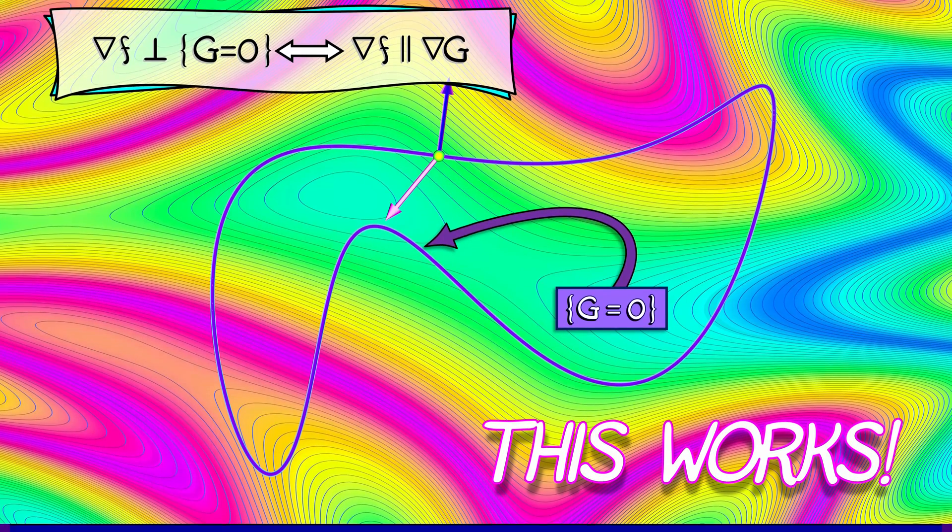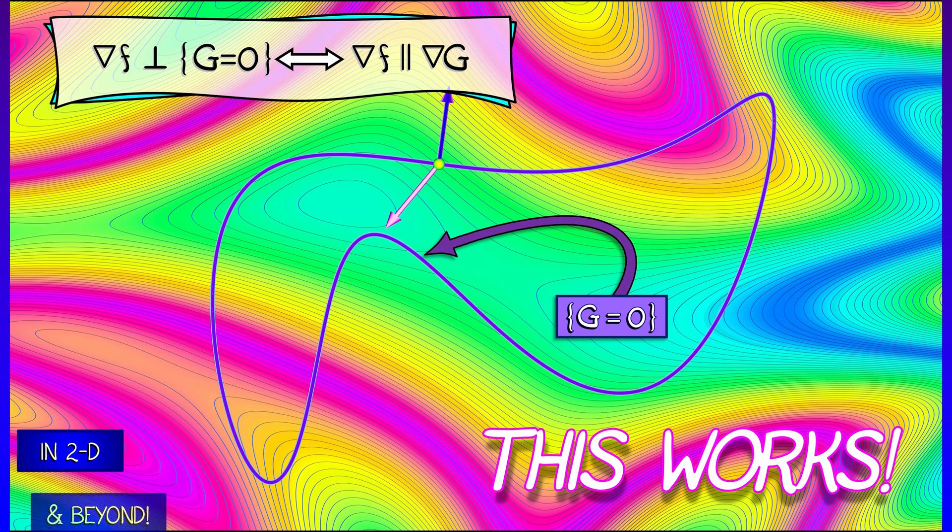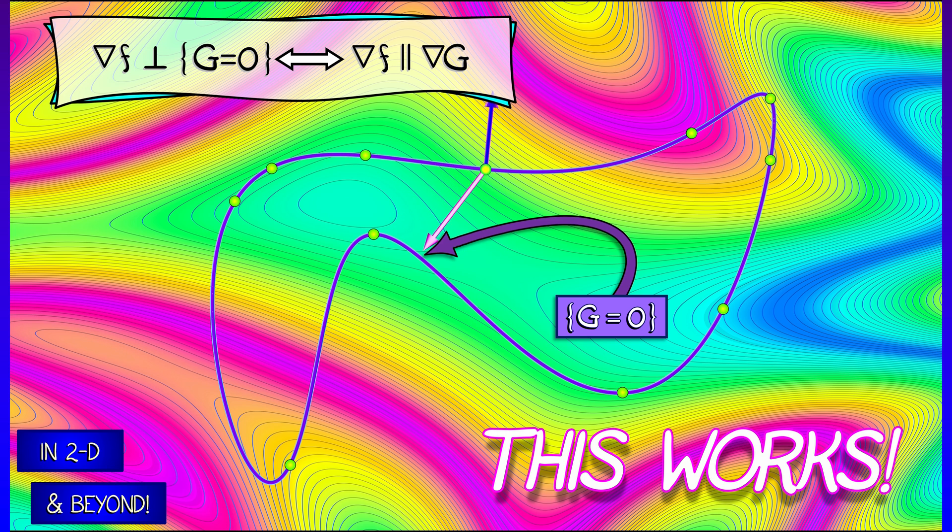Consider the case where, let's say you're in the plane, although it works outside of 2D as well, and you're looking at a constraint set that is not necessarily circular, that's got a lot more interesting structure to it.